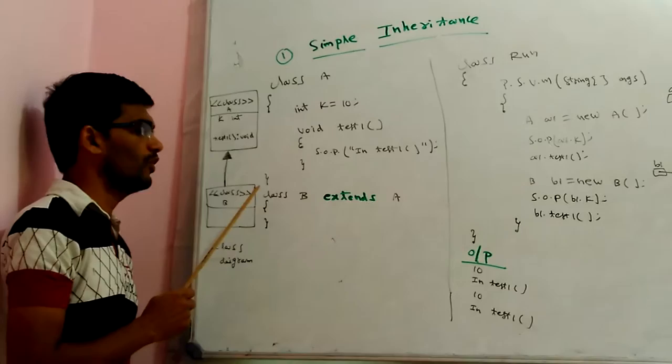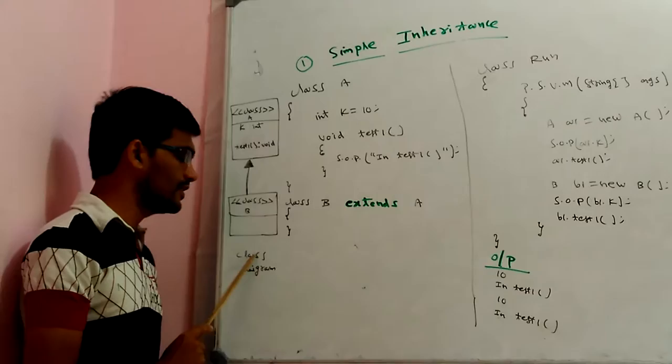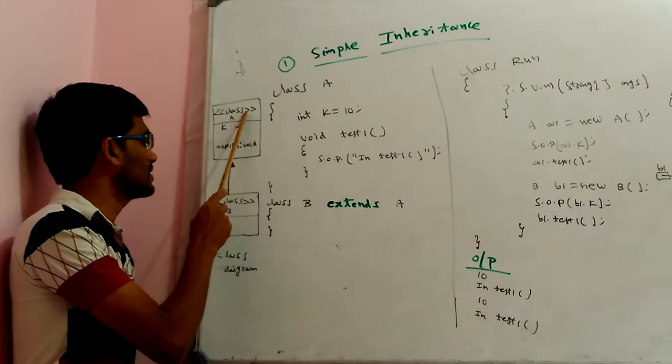In simple inheritance, there is only one level — one class is inherited by another class, so only two classes are involved. This structure is called a class diagram. Based on the class diagram, we have to write the equivalent code.